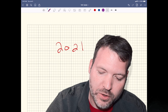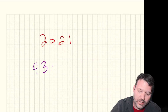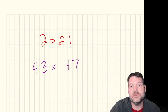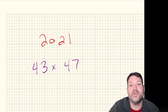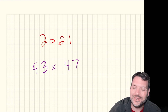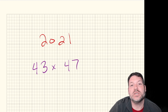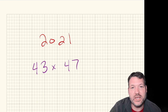2021 is the current year, and beyond that you may have seen that it's the product of two prime numbers: 43 times 47. In fact, they're not just two prime numbers — they're two consecutive prime numbers. But that's actually not what's most interesting to me. What's interesting is that they fit a particular pattern, and today we're going to do a number trick.